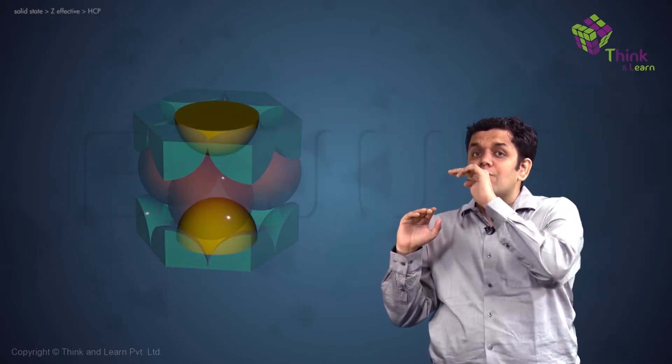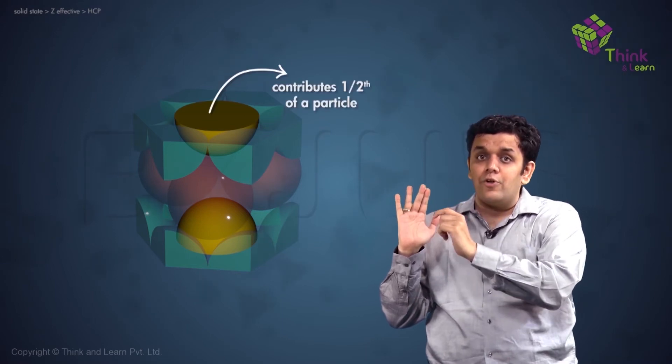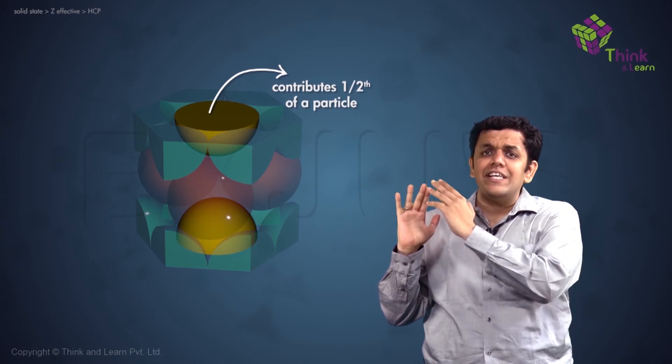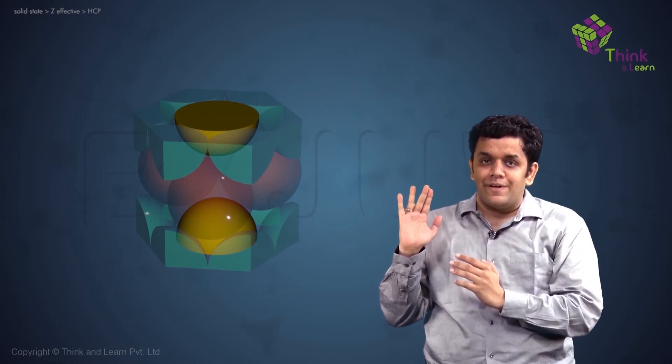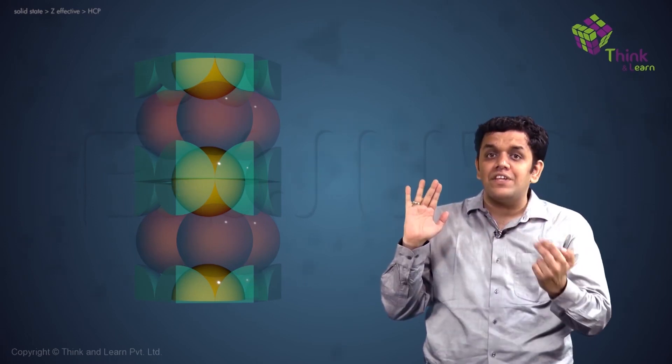Now let us look at the center of the hexagon. The particle located at the center of the hexagon will contribute half towards unit cell U1. Why? This is very similar to the FCC concept. So here you go, half from here and half from the bottom. So again, this contributes to one more particle. So two plus one, three.